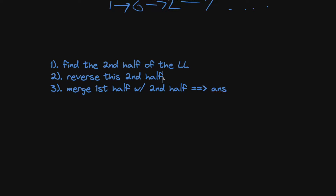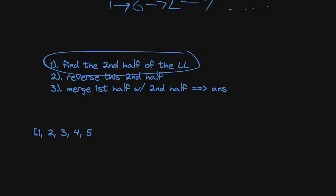So we need three steps: find the midpoint of the linked list, reverse the second half, and merge the first half with the reversed second half. Reversing a linked list is a simple LeetCode problem, and merging two lists is also straightforward. The tricky part is actually finding the midpoint.